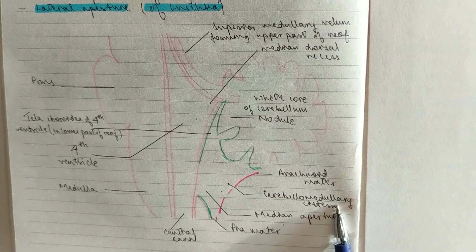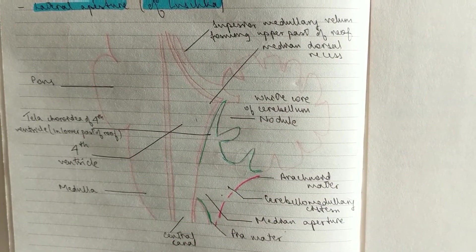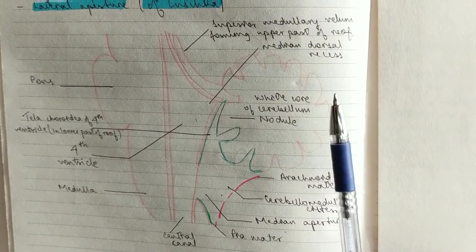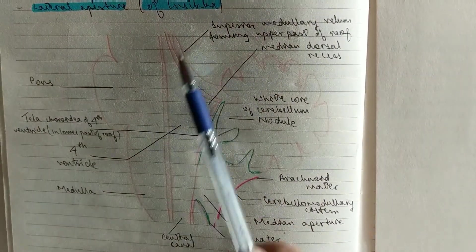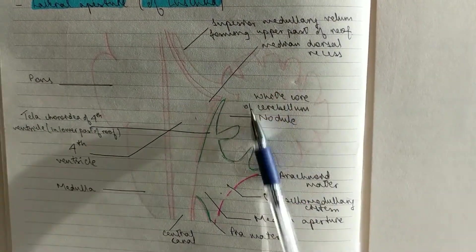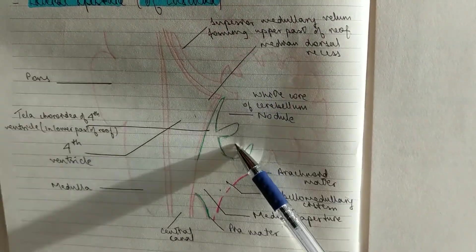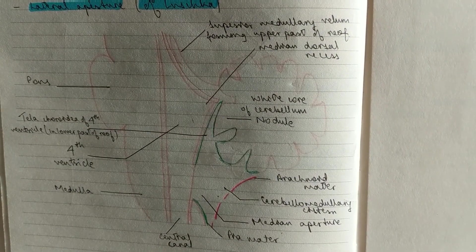You can see the medullary vellum. You can see the superior medullary vellum. And obviously if it's the cerebellum over here, you can have the superior and the inferior cerebellar peduncles.